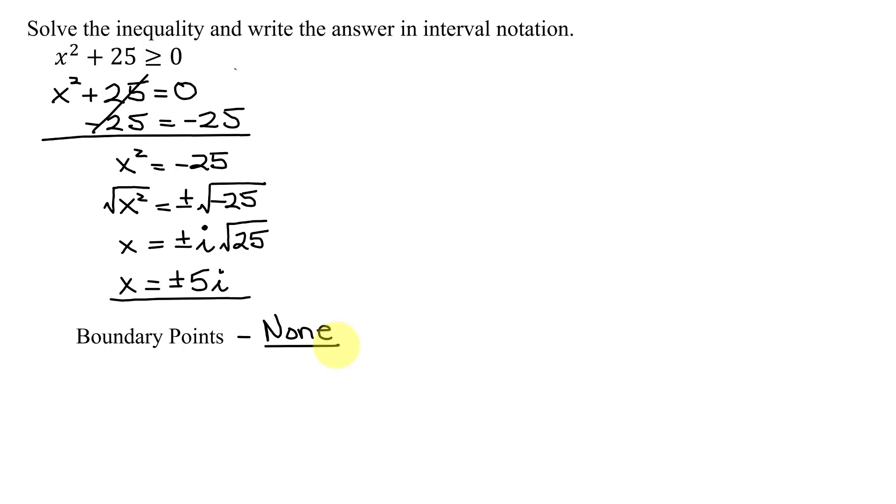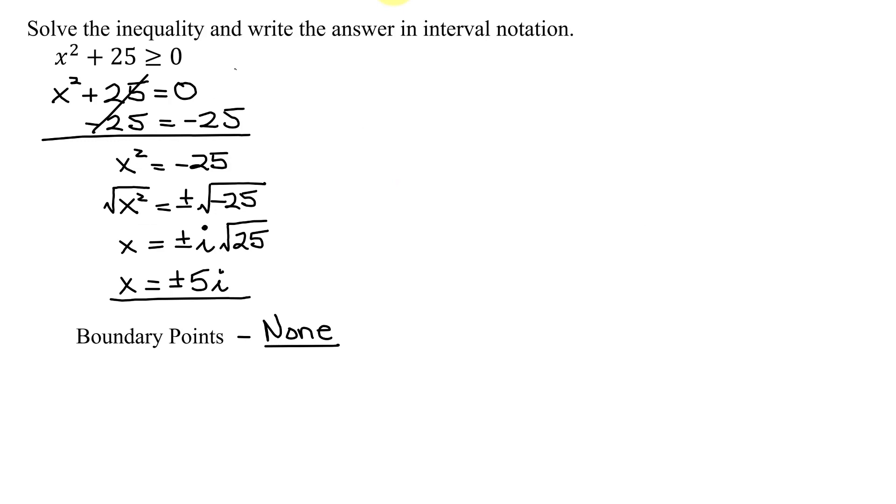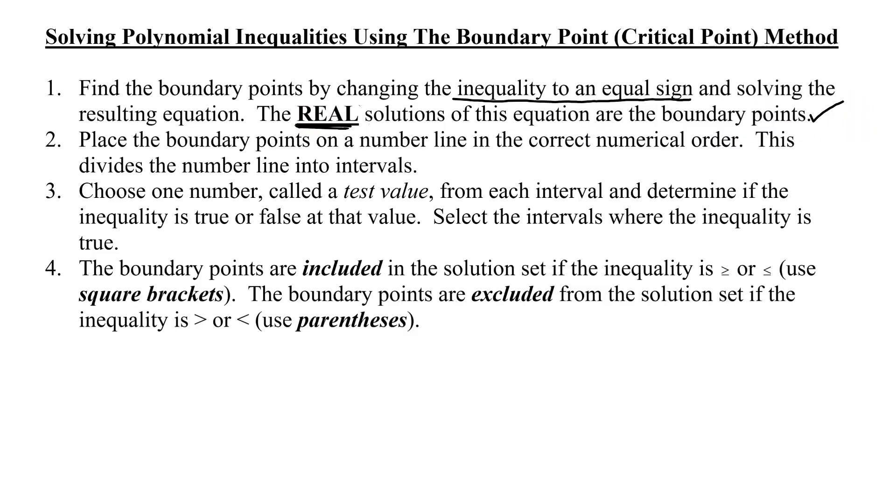So going on to the steps, I've completed step 1. Step 2 says place the boundary points on a number line in the correct numerical order. This divides the number line into intervals. Even though I don't have boundary points, I'm still going to need a number line. Here's my number line. And with no boundary points on it, how many intervals do I have on this number line? Just one interval. So now I have completed step 2.